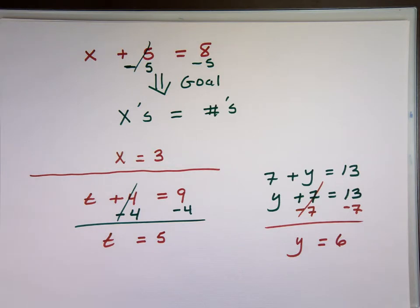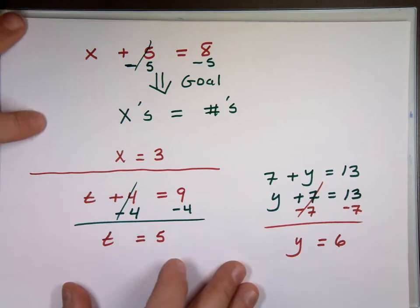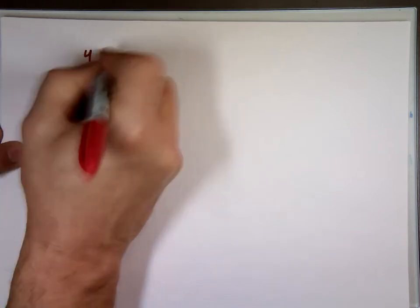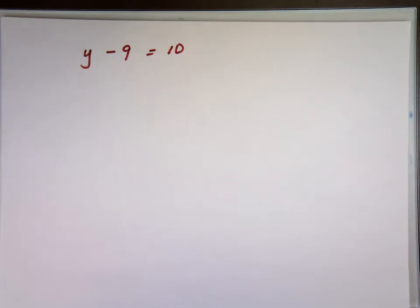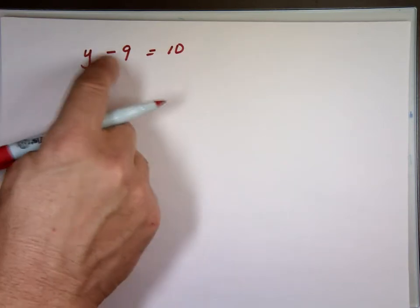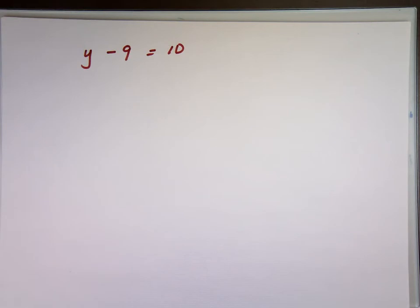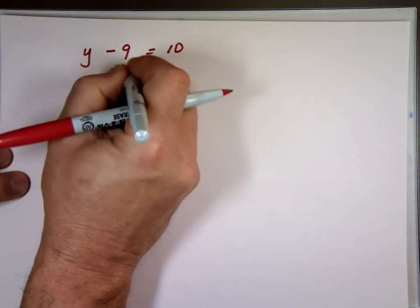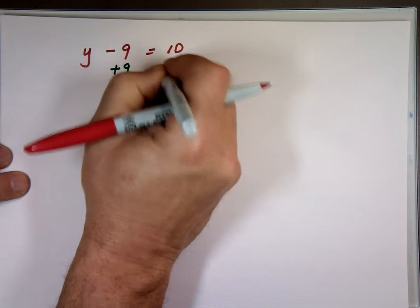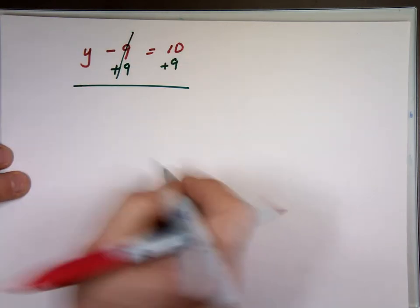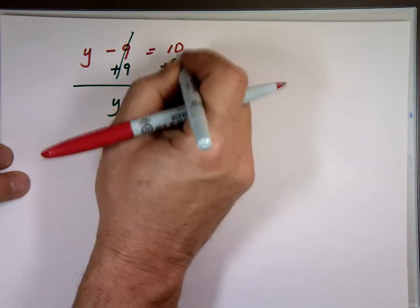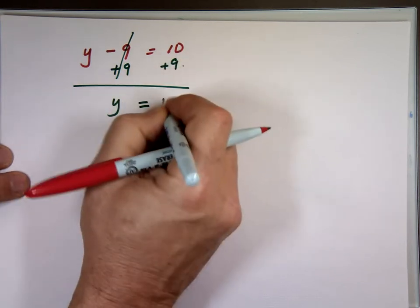What about when you have subtraction? When you have subtraction, like y minus 9 equals 10, to cancel the negative 9, you need to add. When you have subtraction, you add. What's minus 9 plus 9? Gone. y equals 10 plus 9, which is 19.